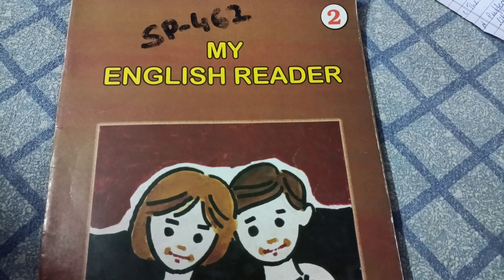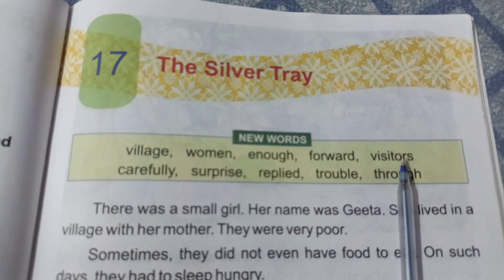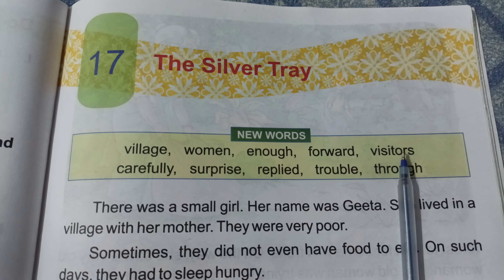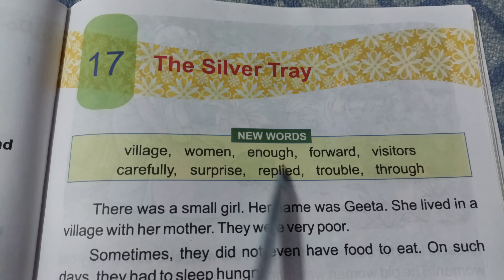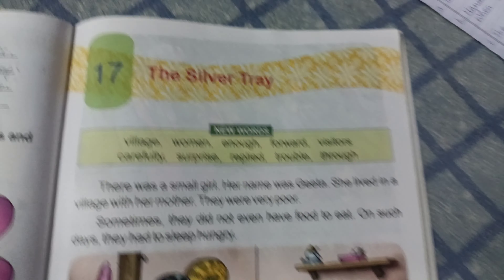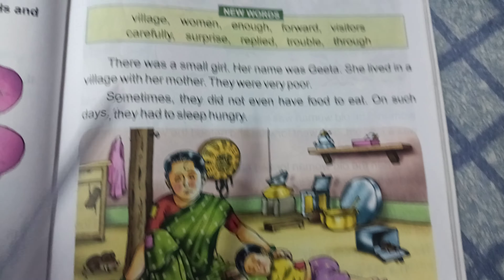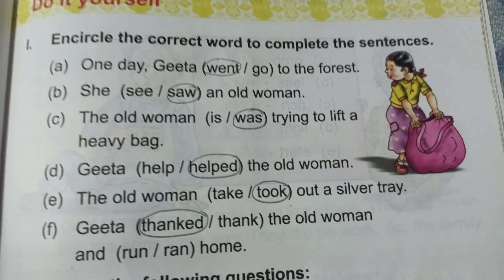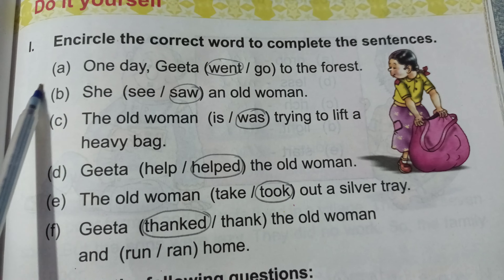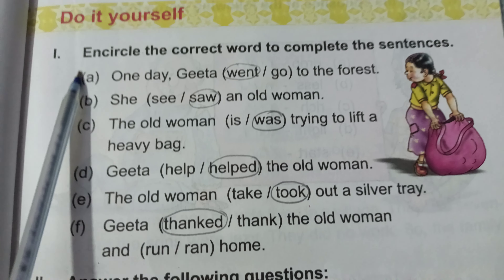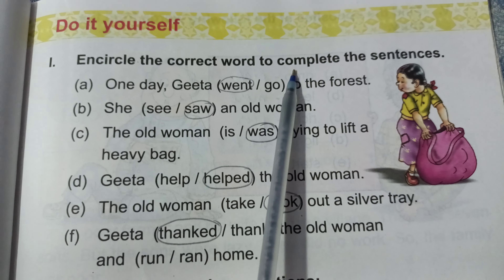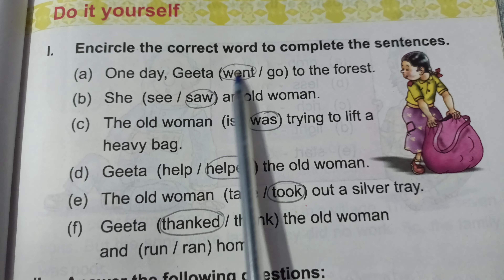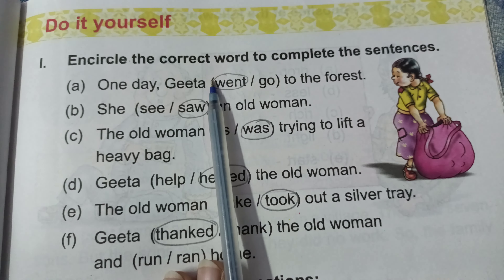I'll take the Outer English Reader book and open page number 67, Chapter 17: The Silver Tray. Today we will solve all the exercises of this chapter. Now come on to Exercise 1, page number 71 — encircle the correct word to complete the sentences. You will be given sentences with a choice of two words.